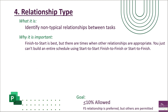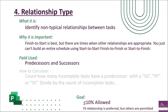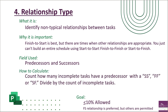To calculate this metric, you look at the predecessor and successor fields. Count how many incomplete tasks have a predecessor containing SS, FF, or SF next to the task ID number. Take that count and divide it by the total count of incomplete tasks. The goal is to get below 10% of tasks having a non-typical relationship — finish-to-start is preferred but others are permitted within that margin.